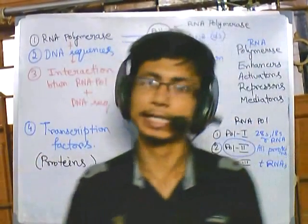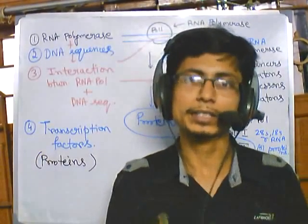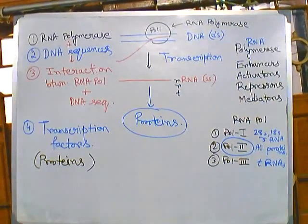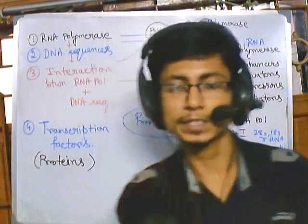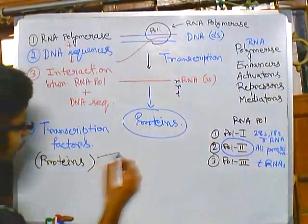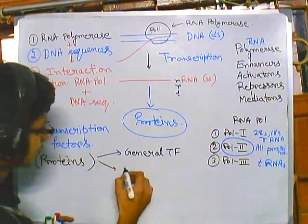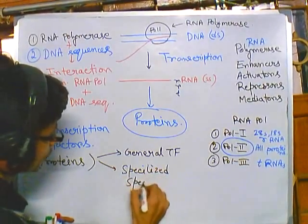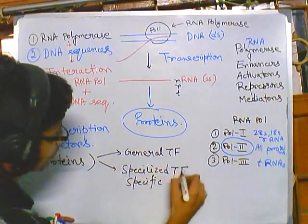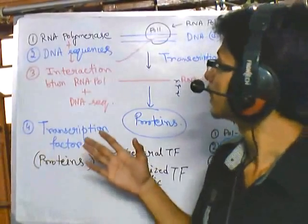Transcription factors can be divided into two different types: one is called general transcription factors (TF), and another is called specific or specialized transcription factors. These two categories are important for understanding how transcription is regulated in the eukaryotic system.